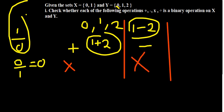Moving to multiplication on set Y: zero multiplied by one is zero, zero multiplied by two is zero, one times two is two, and two times one is still two. Whatever you multiply within that set gives a result within the set itself. So multiplication is a binary operation on Y.